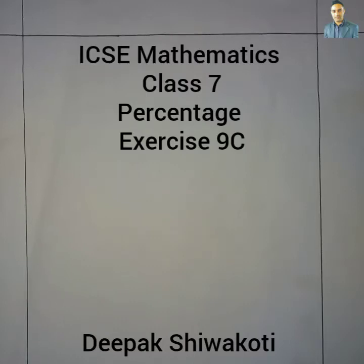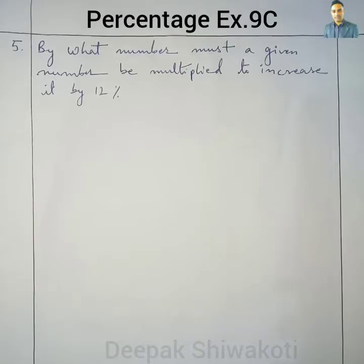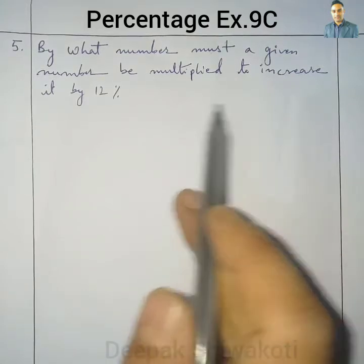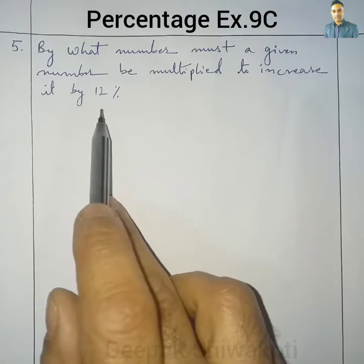Welcome to Class 7 Mathematics. We are in the chapter on Percentage. Today we will do Exercise 9C, Question number 5: By what number must a given number be multiplied to increase it by 12%?